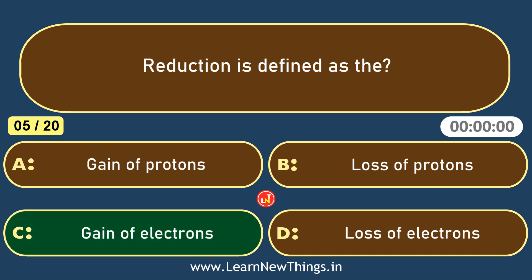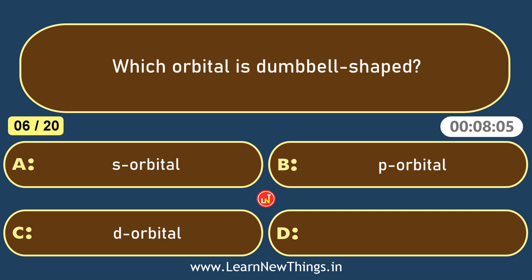Which orbital is dumbbell shaped? P orbital.